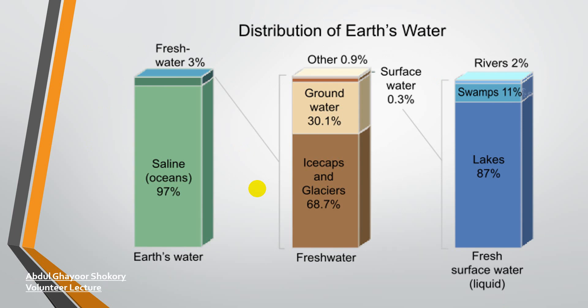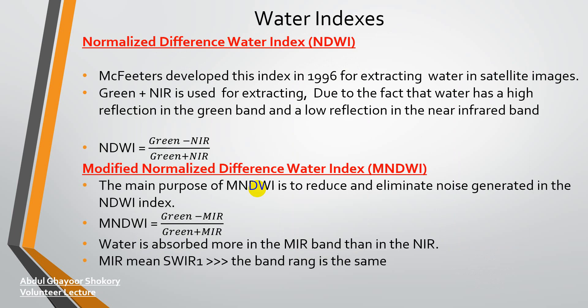Again, looking at the distribution: 97 percent of water is saline water and three percent is fresh water. Of that three percent fresh water, 68.7 percent is ice and glaciers, 13.1 percent is groundwater, 0.3 percent is surface water, and 0.9 percent is other water. Of that 0.3 percent surface water, 87 percent belongs to lakes, 11 percent to swamps, and 2 percent belongs to rivers.